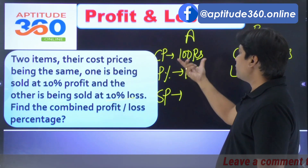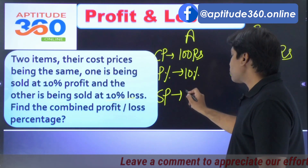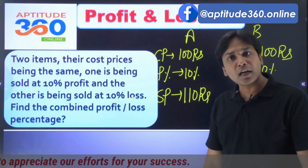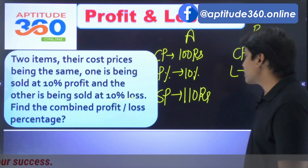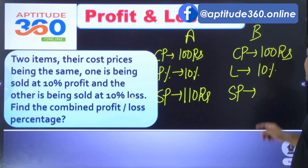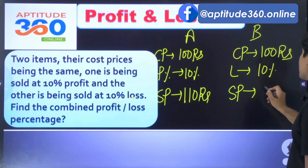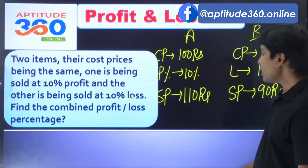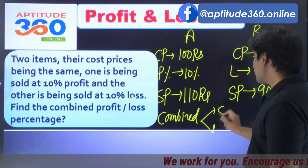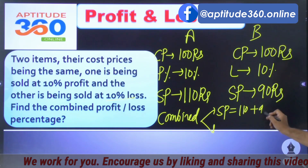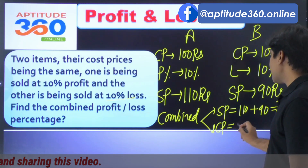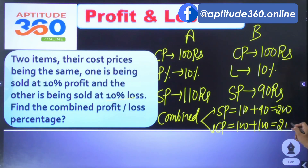The item sold at 10% profit has a cost price of 100 rupees, so its selling price is 110 rupees. The item sold at 10% loss has a selling price of 90 rupees. So the combined selling price is 110 plus 90, which is 200 rupees.